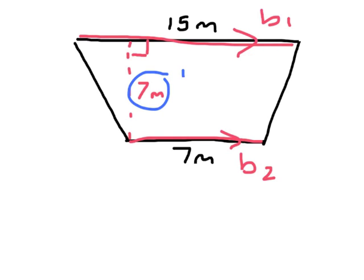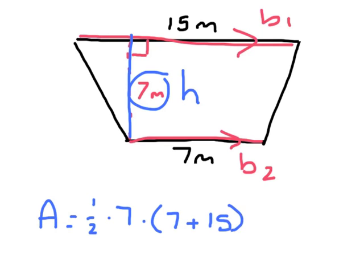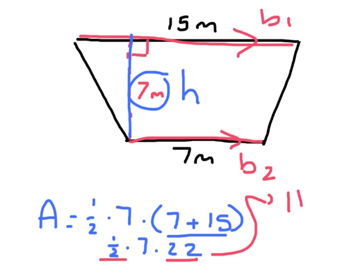This measurement right here is how tall it is — the straight up-and-down height of the trapezoid. So the area equals one-half times the height, times the sum of the two bases: seven plus fifteen. Following order of operations, do parentheses first — that's twenty-two. So we have one-half times seven times twenty-two. Using the commutative property, one-half times twenty-two is eleven, times seven, giving us a total area of seventy-seven meters squared.